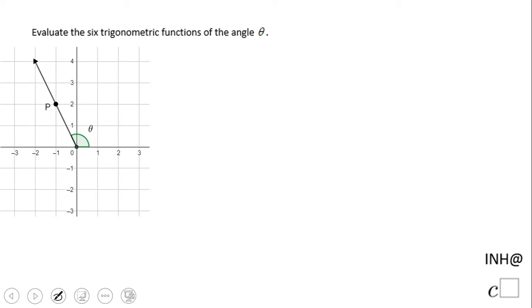Welcome or welcome back. I'm in help at C-square. In this problem, we're going to evaluate the six trigonometric functions of angle theta. What do we notice about this angle theta? The terminal side, which is this one, contains the point (-1, 2).